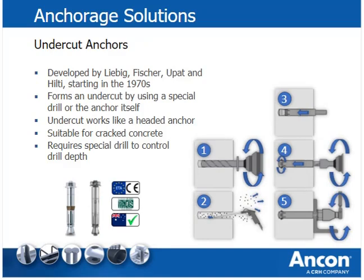Undercut anchors were developed to form an interlock with the concrete at the base of the drilled hole. Development started in the 1970s and the connection method is similar to that of headed anchors. The undercut is formed either by a special drill or by the anchor itself, and installation requires a special drill to control the drill depth. Undercut anchors are available with European Technical Approvals (ETA) and Evaluation Service Reports from the International Code Council. They are available in different diameters and finishes, and have the advantage over torque and displacement-controlled anchors that they do not introduce any expansion force that can lead to splitting of the concrete.